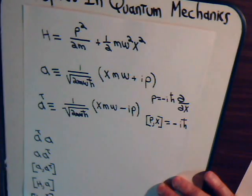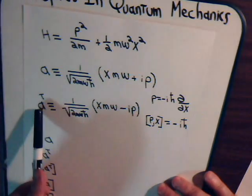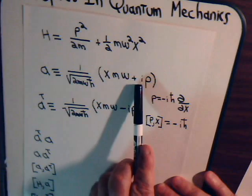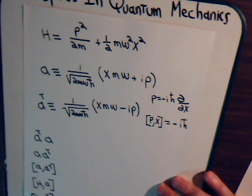And then the complex conjugate of a, a dagger, is the same thing, except this becomes a minus sign.